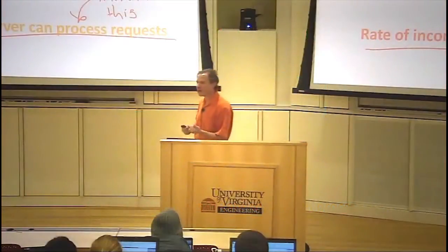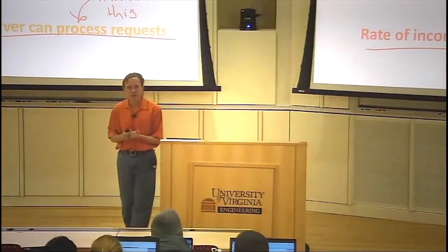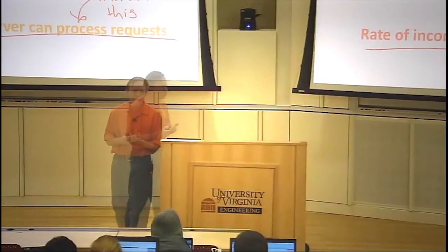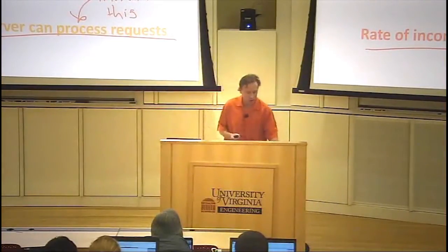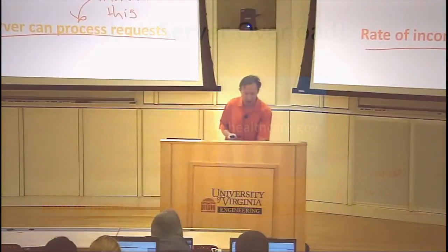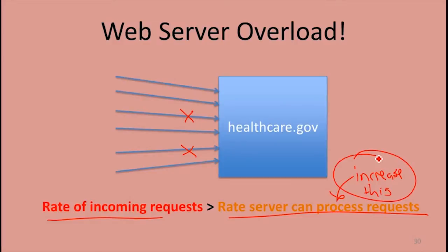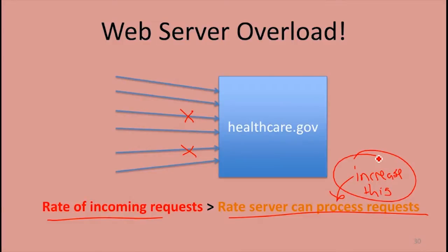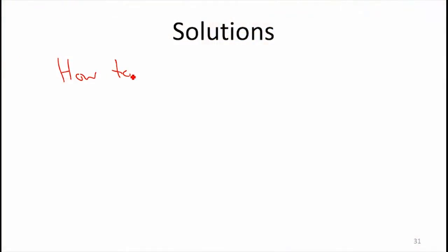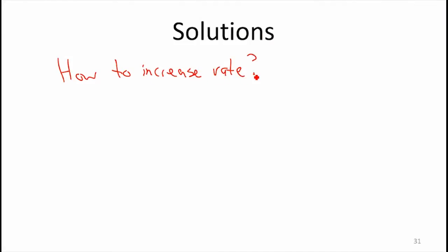So that's part of what your scheduler might have to do — decide which requests to drop. Your real goal, assuming you want to serve all the requests, is to increase the rate that you can process requests. So how do we increase the rate that our server can process requests? What are different things we might do?